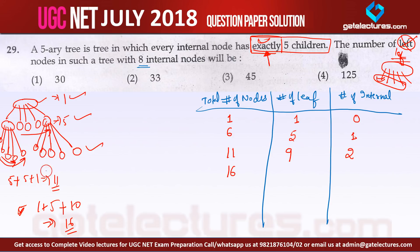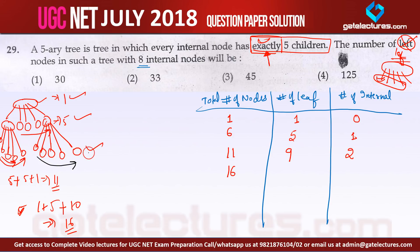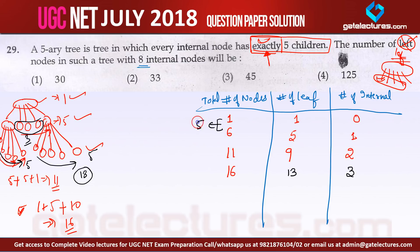For this case with 16 total nodes, the leaf nodes are: 5 from the first group, 5 from the second group, and 3 remaining, giving 13 leaf nodes with 3 internal nodes. Observing the pattern, total nodes increase by 5 each step: 1, 6, 11, 16, 21... and leaf nodes increase by 4 each step: 1, 5, 9, 13, 17...